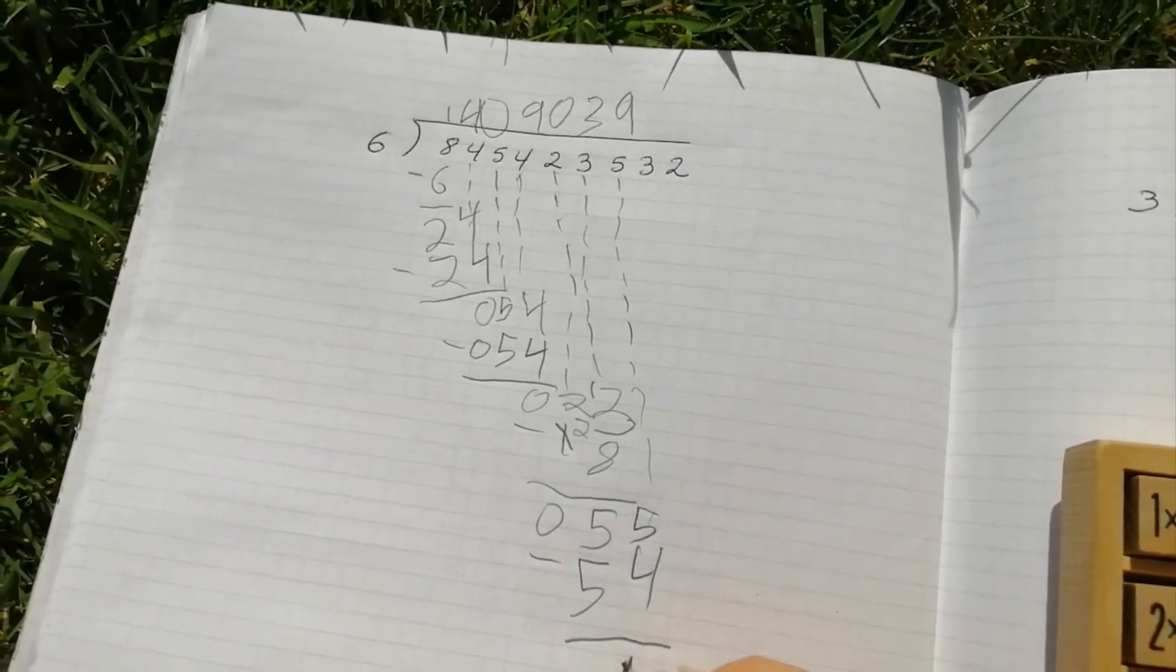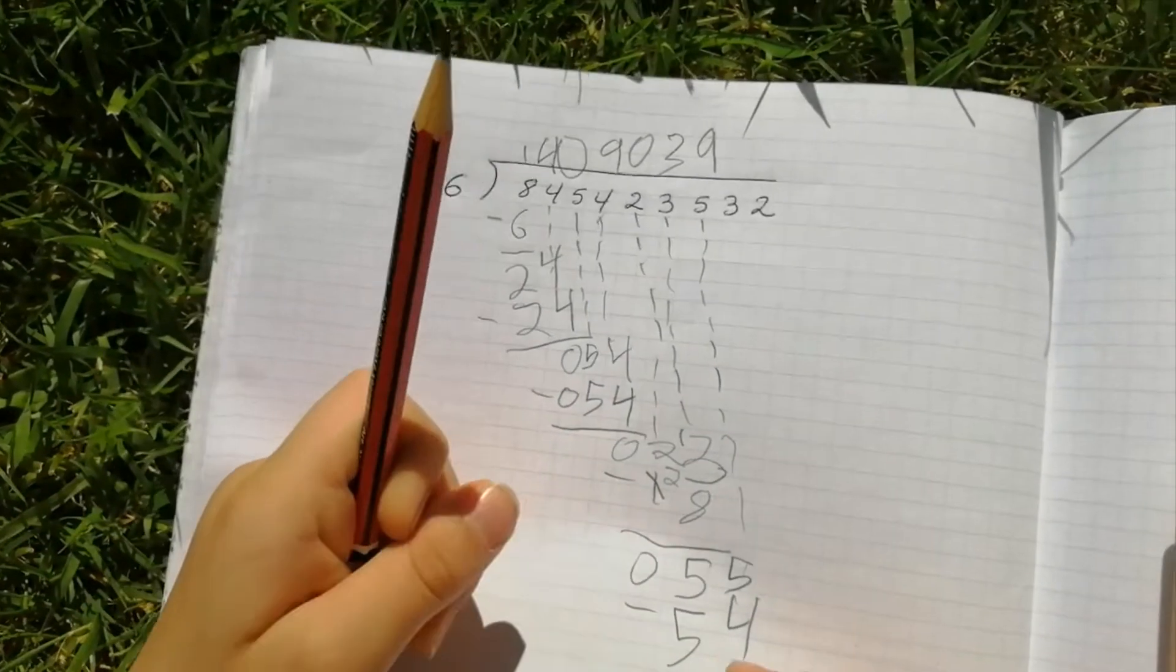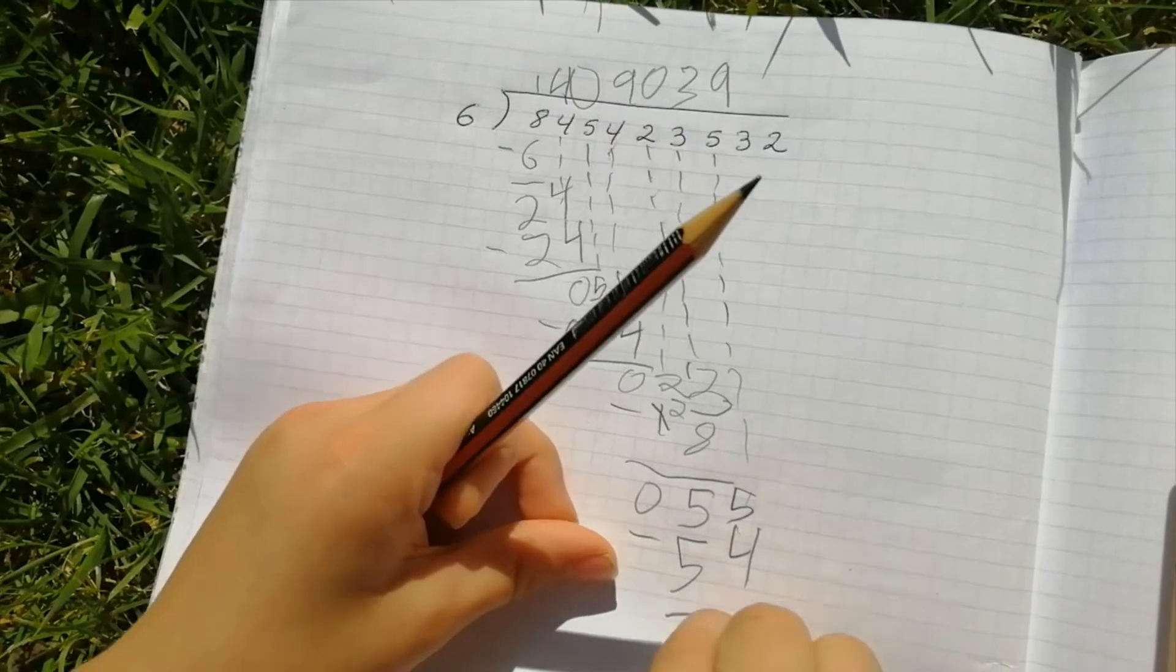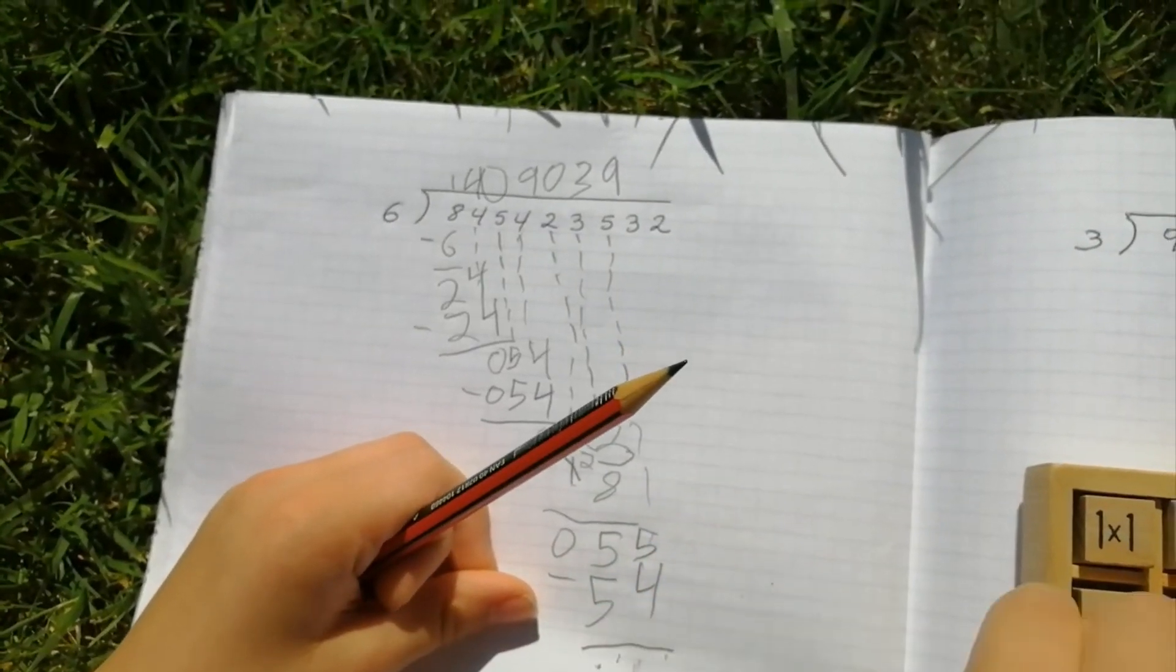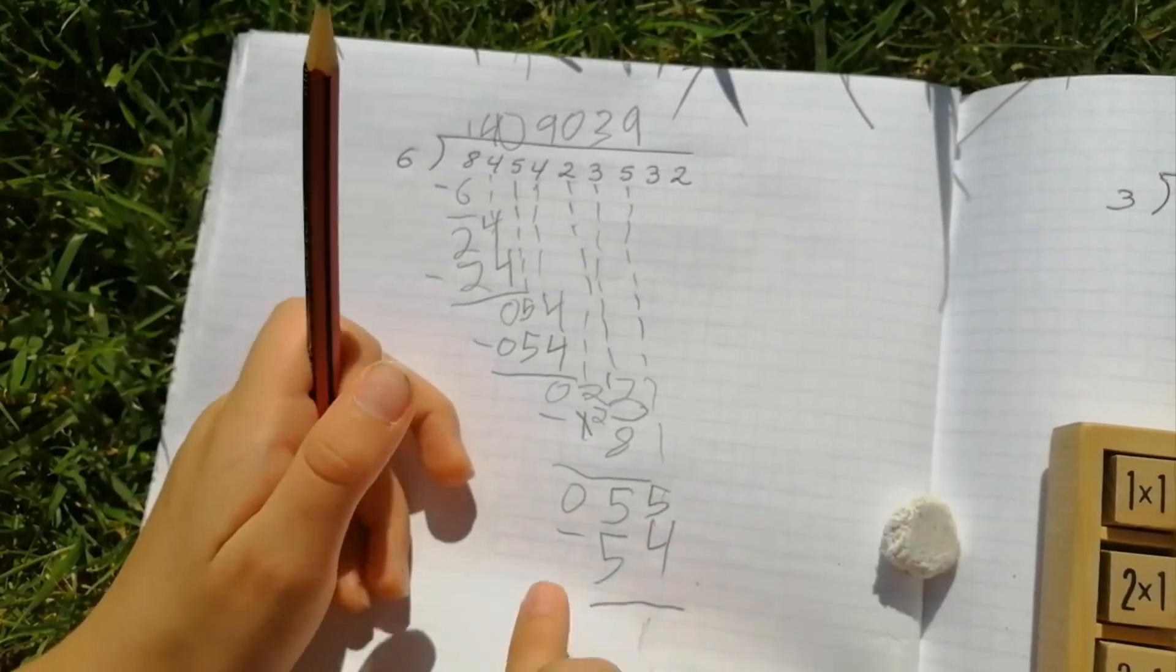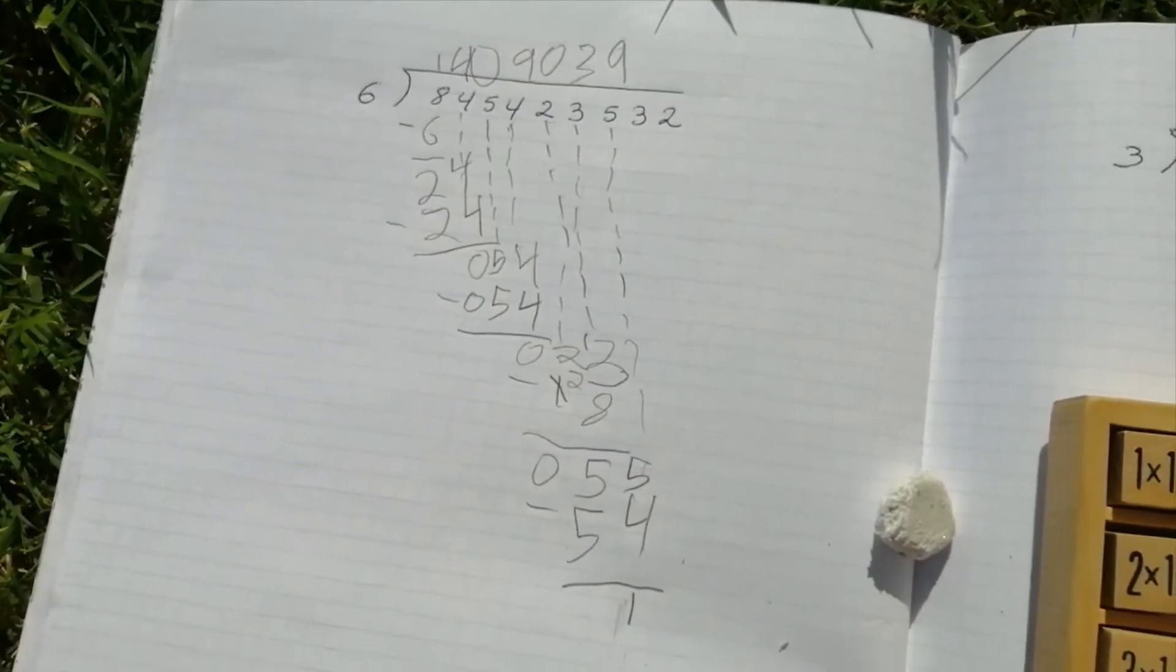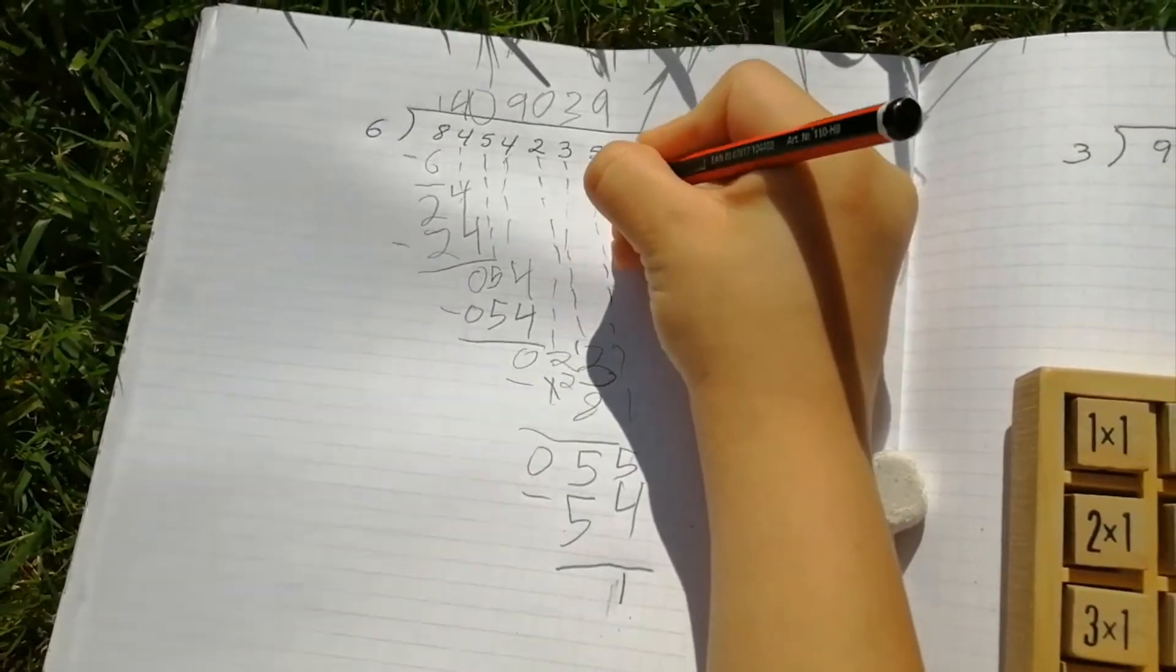One. I should have done scribbles. So it's one. And I just rubbed it out because I done scribbles. I thought I did it in the wrong place. So it's there. One. And put the next number down.